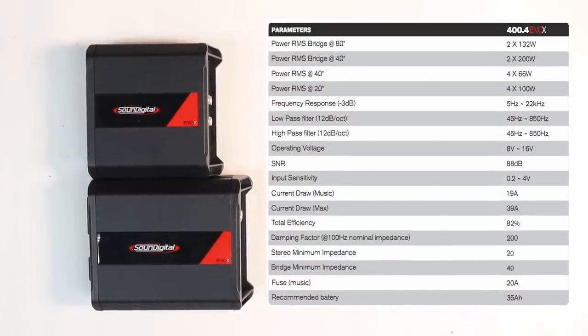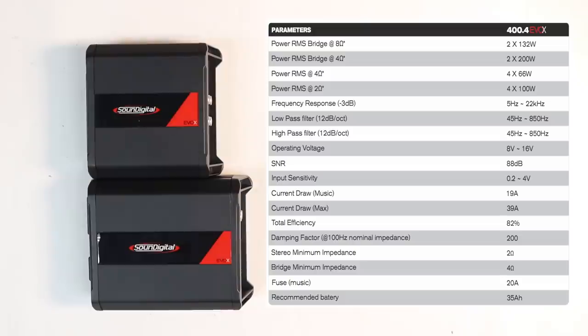Let's take a look at some specifications for the amplifier. The 404 comes in at 4 by 66 watts at 4 ohm. It does increase the power output at 2 ohm. It has a frequency response from 5 to 22,000 hertz. Low pass filter as we said was between 45 and 850 hertz. The high pass filter is the same. Operating input voltage is between 8 and 16 volts with a signal to noise of 88 db. Input sensitivity is 0.2 to 4 volts. Current draw during music is 19 amps with a maximum current draw of 39 amps. Total efficiency of the amplifier is 82%. Recommended fuse size is a 20 amp fuse.